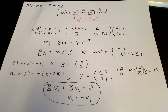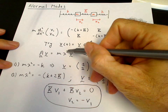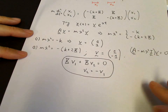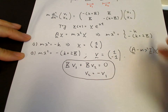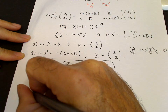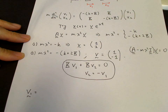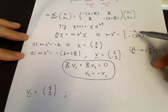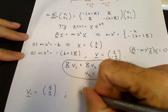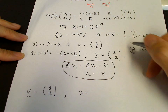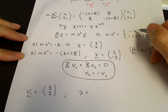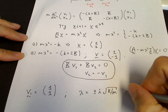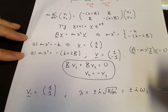Now we have two eigenvalues and two associated eigenvectors. Our Ansatz solution is v times e to the lambda t. For the first eigenvector [1,1], m lambda squared equals minus k, so lambda is the square root of minus k over m, giving plus or minus i times the square root of k over m, which we call plus or minus i omega 1.